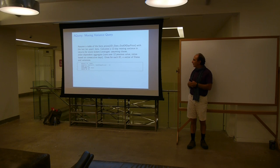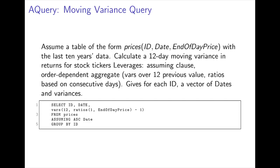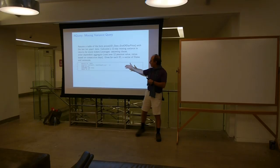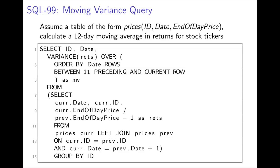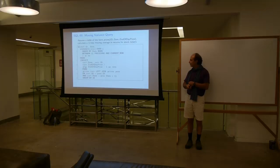Here's another query — a moving variance query. The idea here is that we're taking the ratio of the end-of-day prices from one day to the next, and we're calculating the moving variance across 12 values. Again, we're doing an ASSUMING and we're using GROUP BY, so this is normal SQL. An SQL programmer would not be shocked by this. Here is a version of this in SQL 99. This one actually is correct, but if you get this right away, then you're really an expert SQL 99 programmer. And this is just a lot harder to understand, and it's slower.